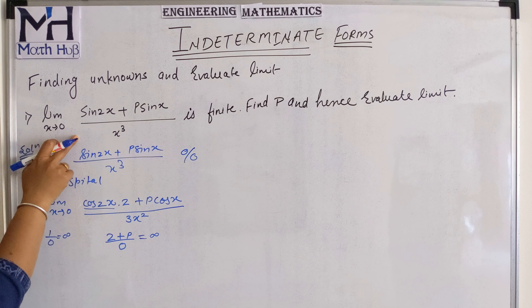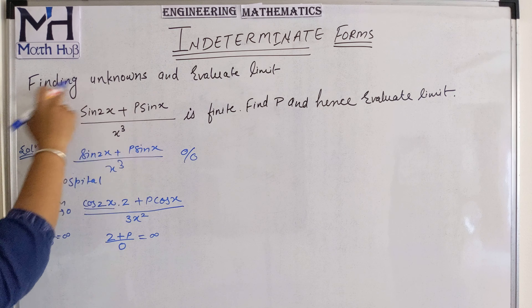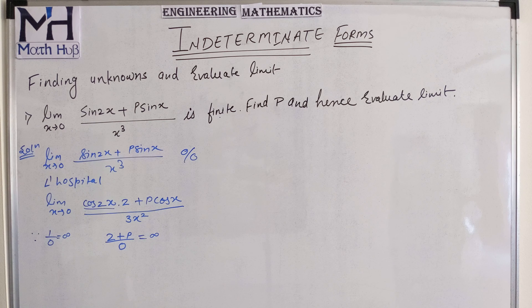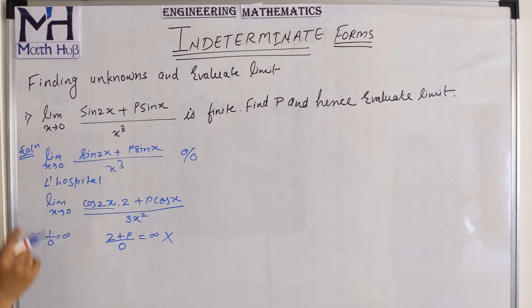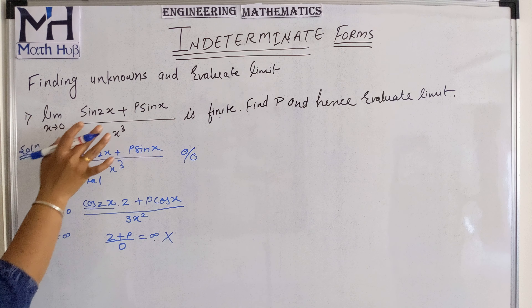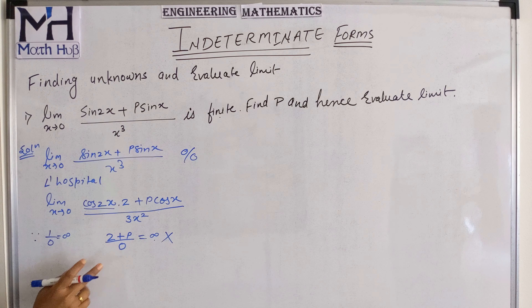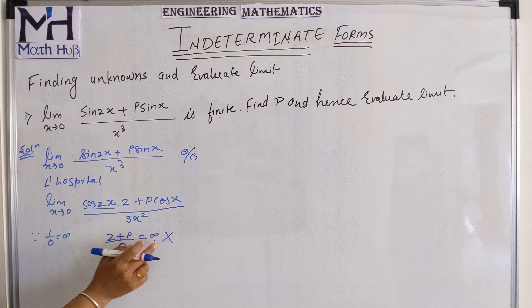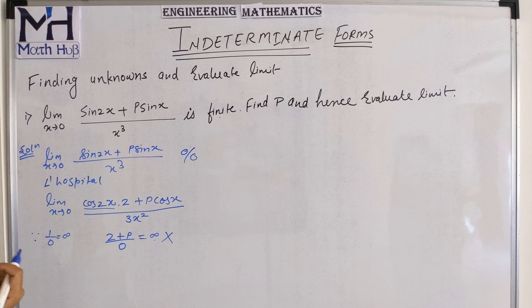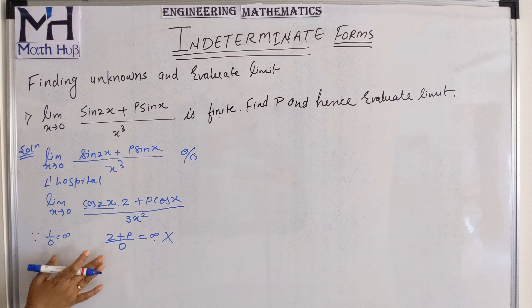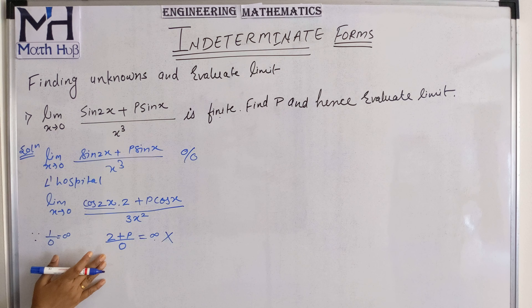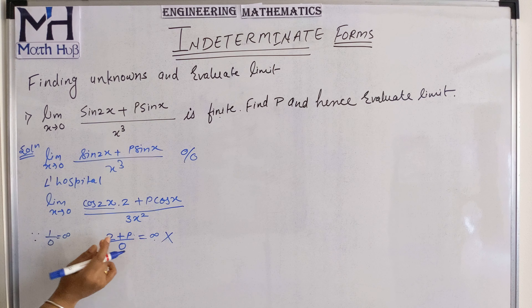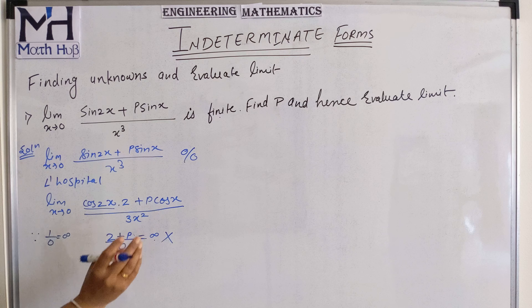But the question says the value of this function is finite. So can the answer be infinity? No. Because they say the limit of this function is finite, so the value of this function cannot be infinite. Now if it cannot be infinite, what else can it be? If the numerator becomes 0 again, then this function will again be an indeterminate form.